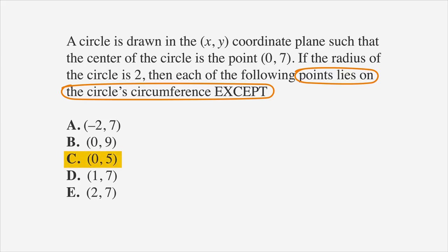If we plug in C, the point 0,5, our equation becomes 0 squared plus 5 minus 7 squared, or negative 2 squared, which is equal to 4. That point works, so let's cross out C.